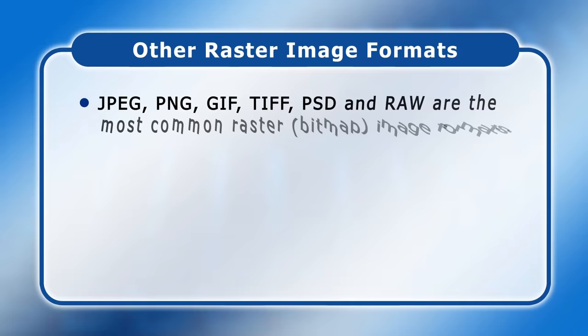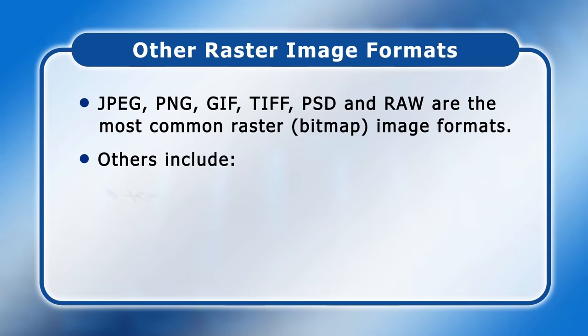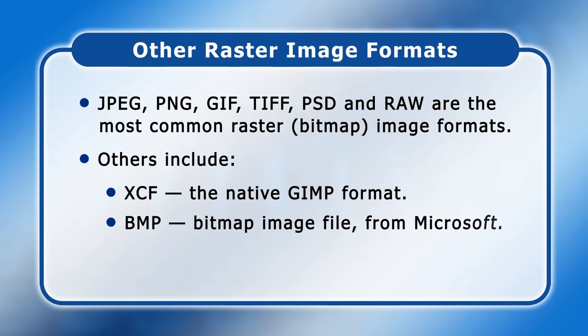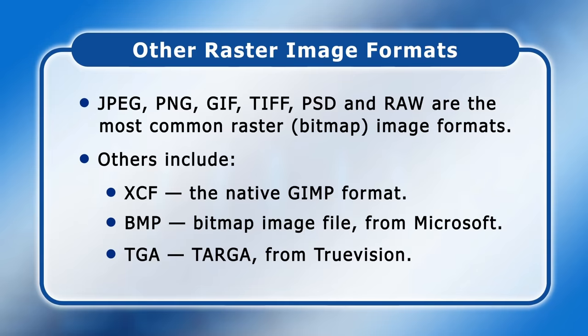I could continue for a very long time detailing additional raster file formats, but JPEG, PNG, GIF, TIFF, PSD and raw are the most common. Others to be aware of include XCF, which is the native format used by the GIMP photo editor; BMP, or the bitmap image file, which was developed by Microsoft; and TGA, which was developed by TruVision and is often known as TARGA.